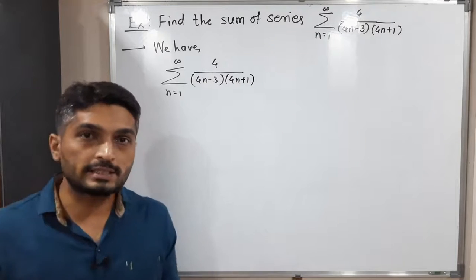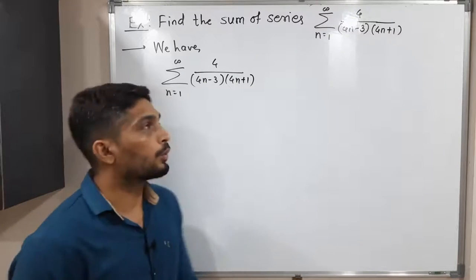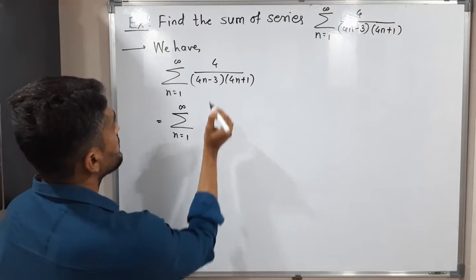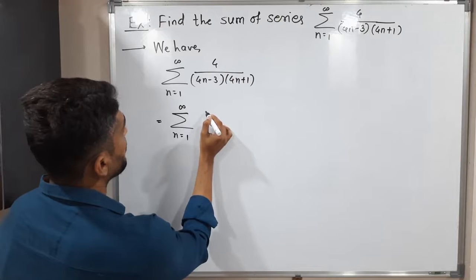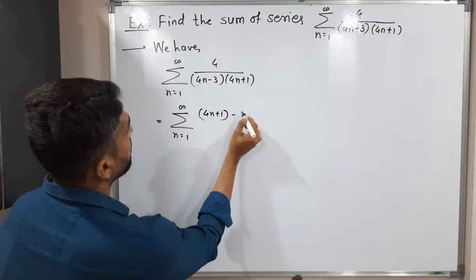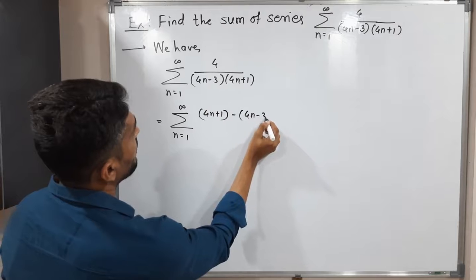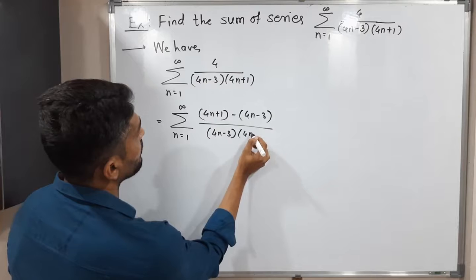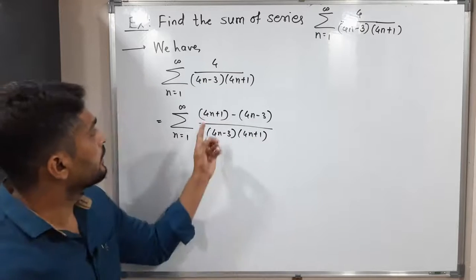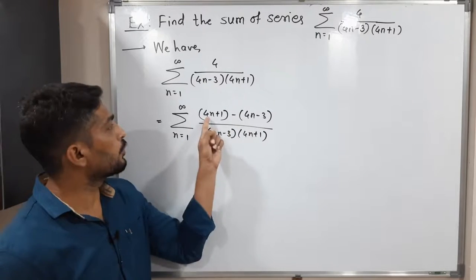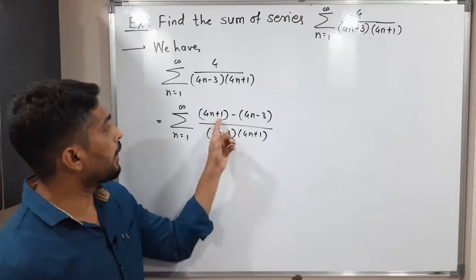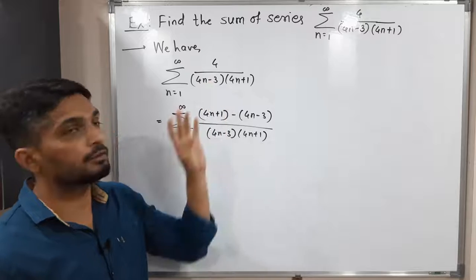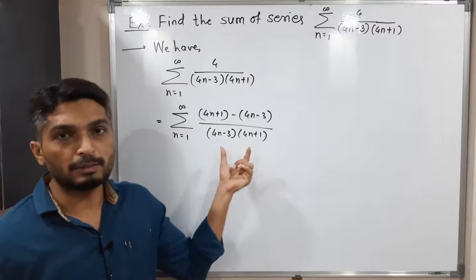I will try to express the same series in a different way. This is equal to summation n running from 1 to infinity. This 4 can be expressed as (4n plus 1) minus (4n minus 3), divided by the same denominator. If you solve these two brackets, 4n minus 4n cancels, and 1 minus minus 3 gives 1 plus 3, which is 4. So the numerator is 4, and the denominator remains the same.